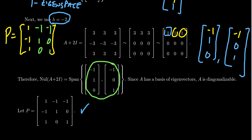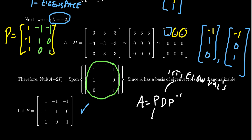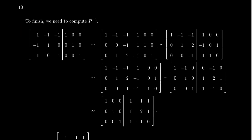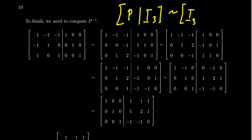Let's summarize what we've done to find the diagonalization A = P D P inverse. First, we found eigenvalues from the characteristic polynomial. Second, we found eigenvectors to construct P. The third and final piece is P inverse. How do we find it? We augment P with the identity matrix I3 — this is our inversion algorithm — and row reduce until we get I3 on the left and P inverse on the right.